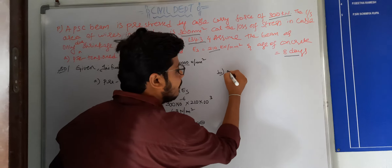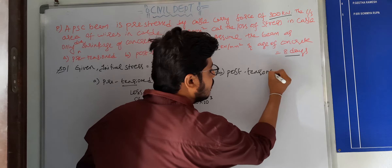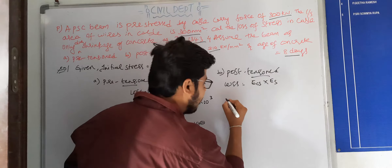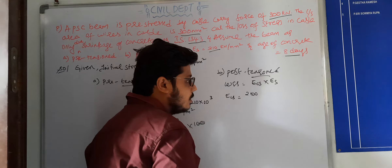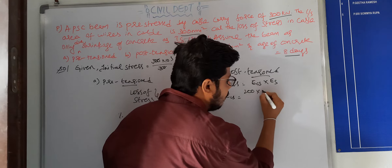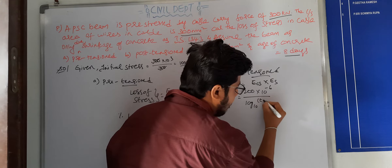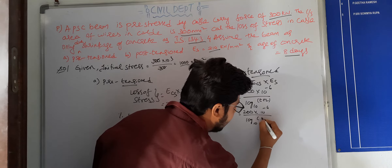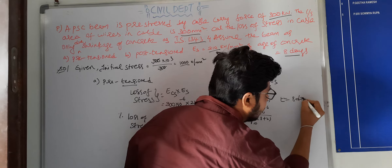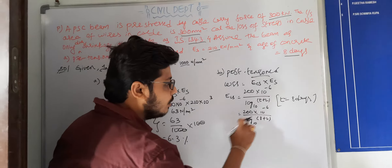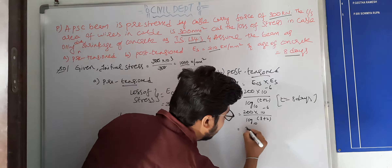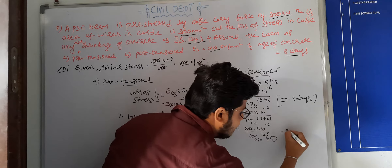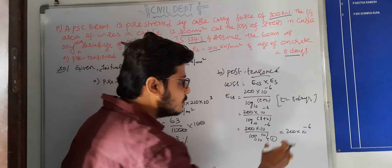For post-tension, the same loss formula applies: Loss = ECS × ES. But here ECS = 200 × 10⁻⁶ / log₁₀(t + 2). With t = 8 days: ECS = 200 × 10⁻⁶ / log₁₀(8 + 2) = 200 × 10⁻⁶ / log₁₀(10) = 200 × 10⁻⁶ / 1 = 200 × 10⁻⁶.